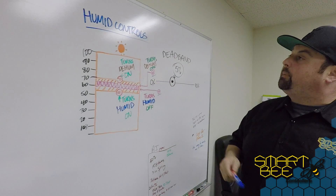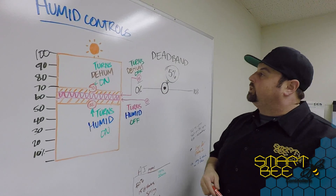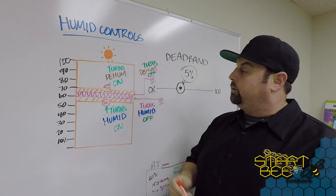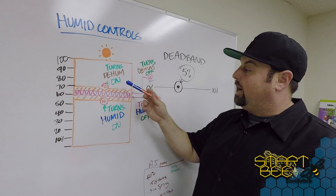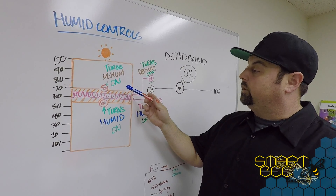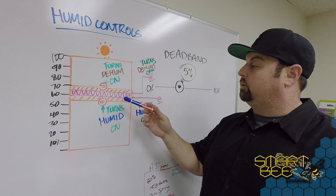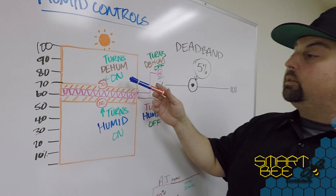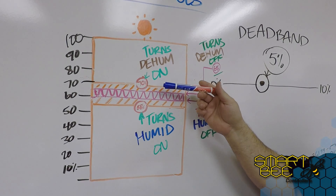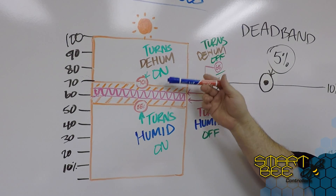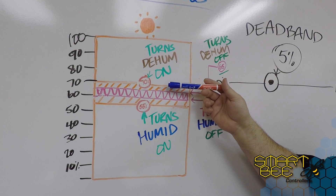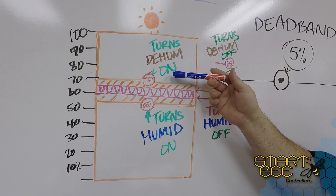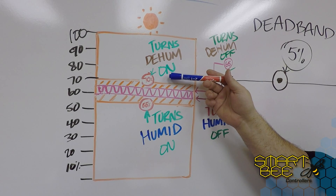Over here we have our dead band setting. The dead band came about because we found that our third-party appliances in our customers' gardens were cycling on and off too quickly. For instance, the dehumidifier in this case would turn on at 71 percent but would turn